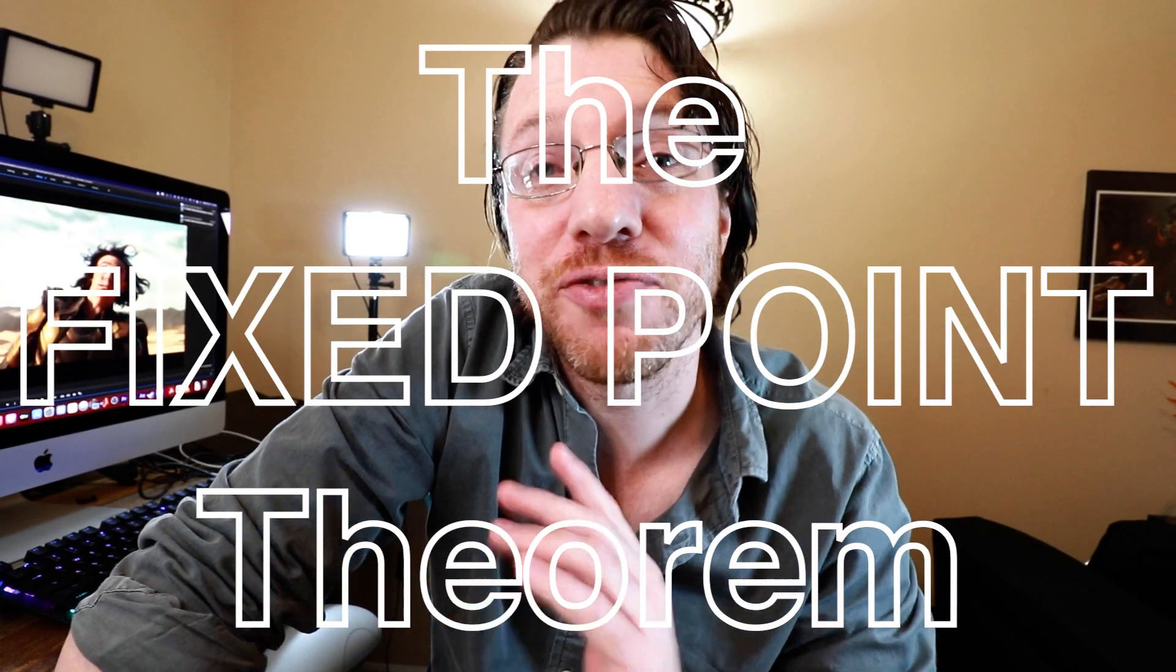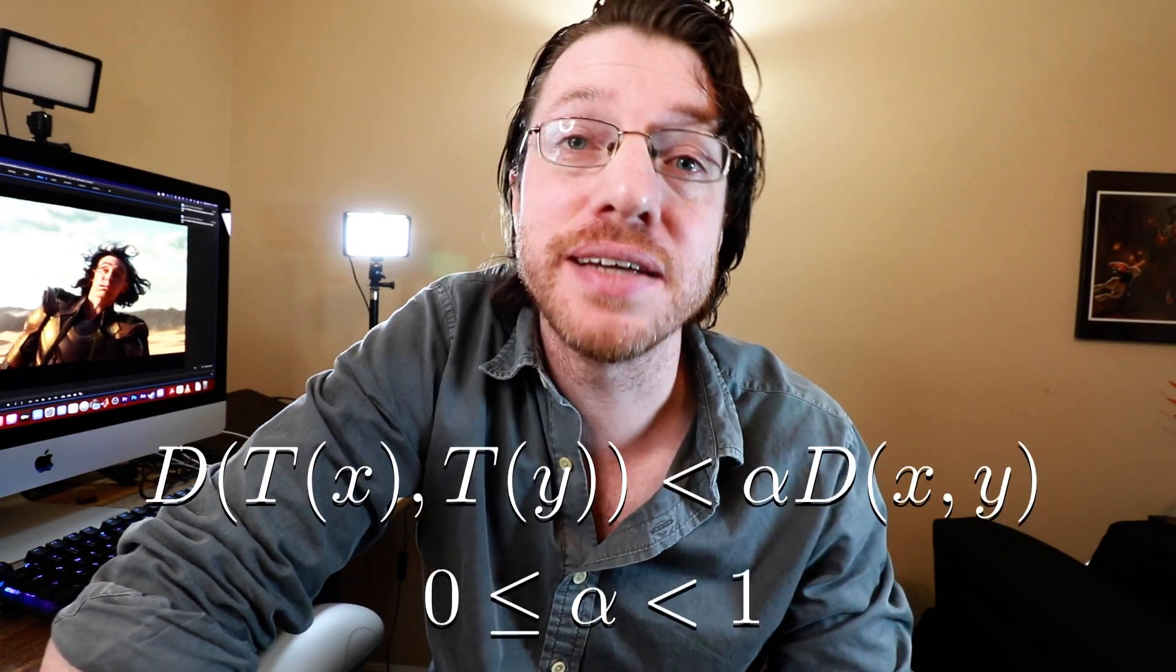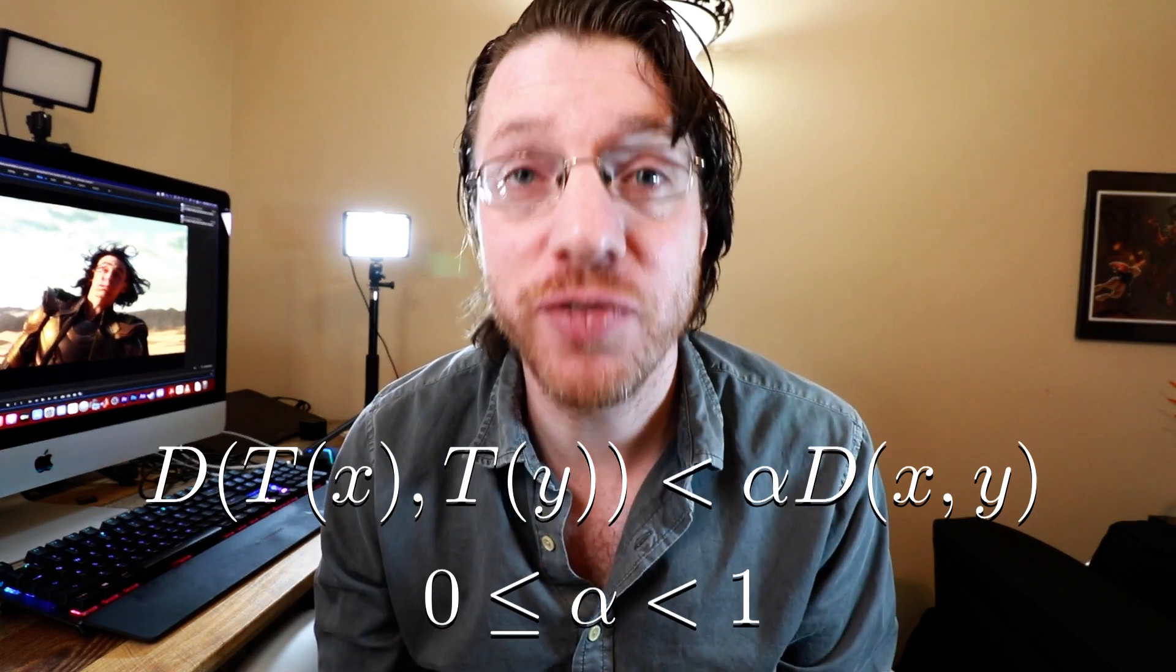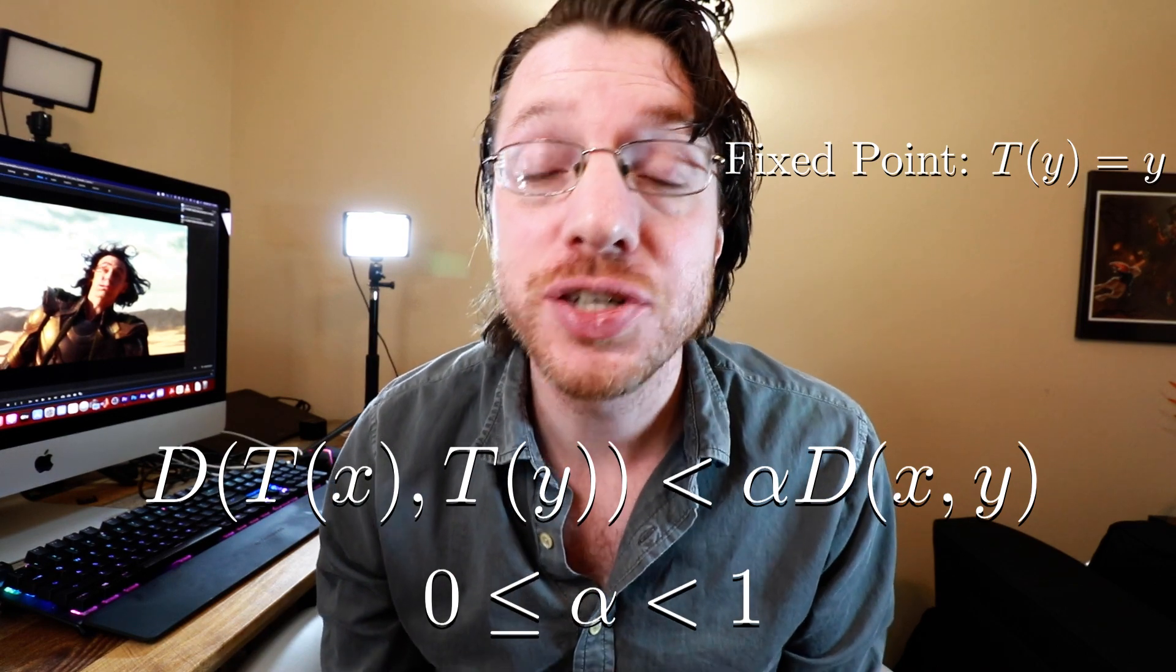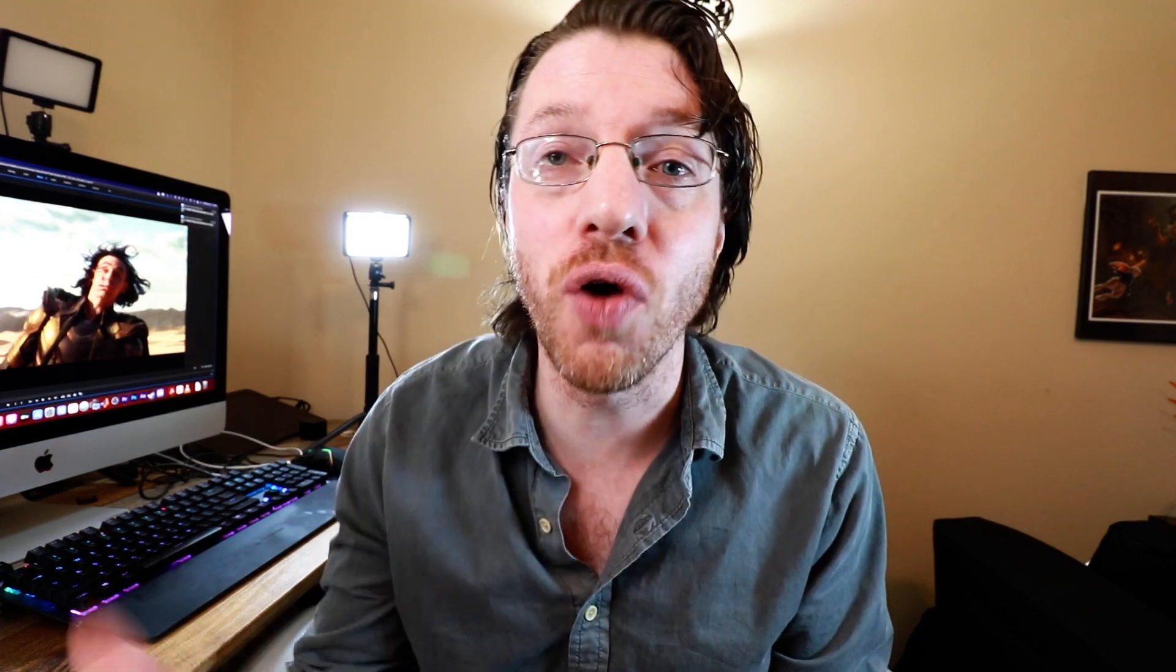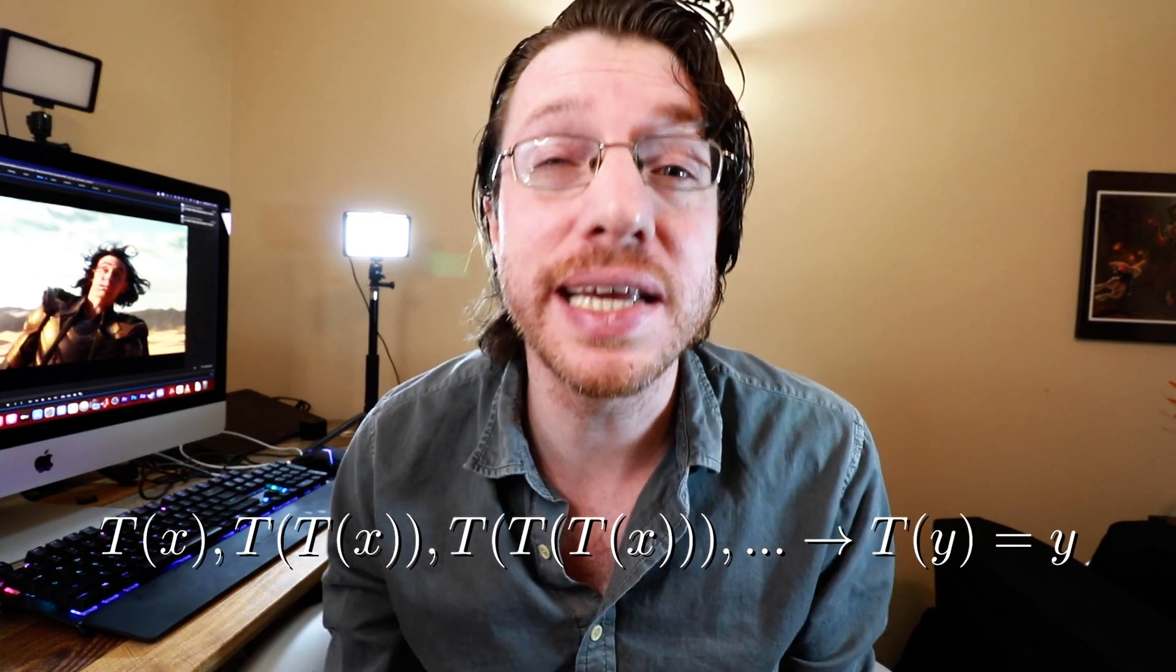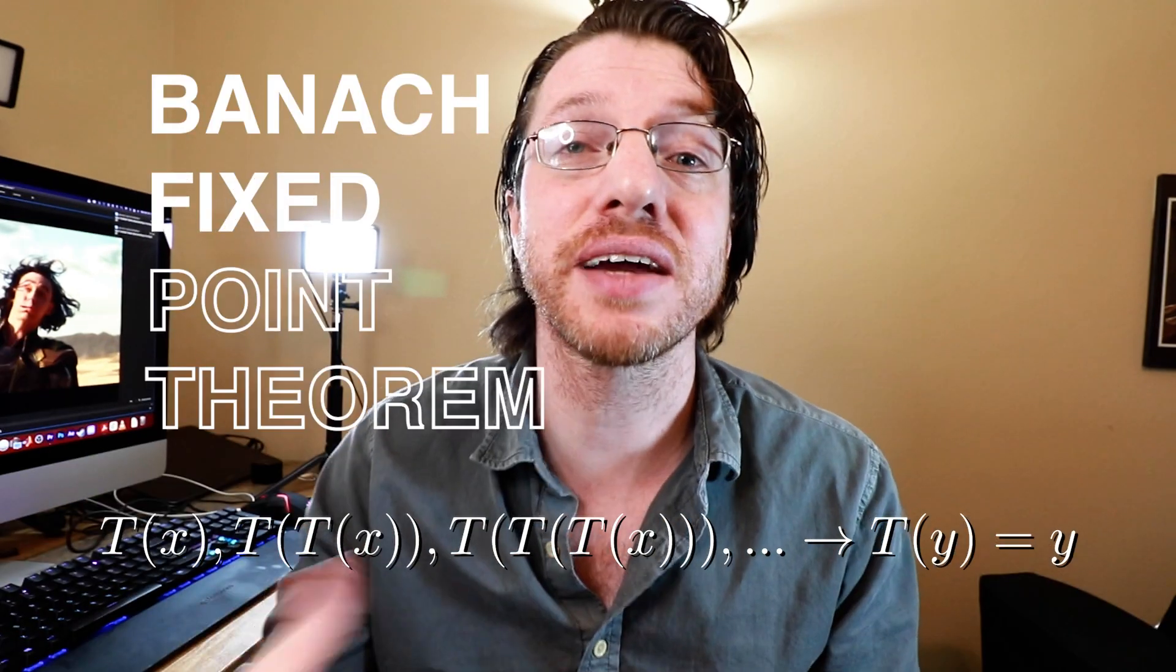So now let's talk about the fixed point theorem. It basically says that if we have a contraction and a non-empty complete metric space, then you are guaranteed to have a fixed point of that contraction. And in fact, you can find that fixed point just by iterating your operation over and over and over again. This is actually a really easy thing to prove and this is called the Banach fixed point theorem.